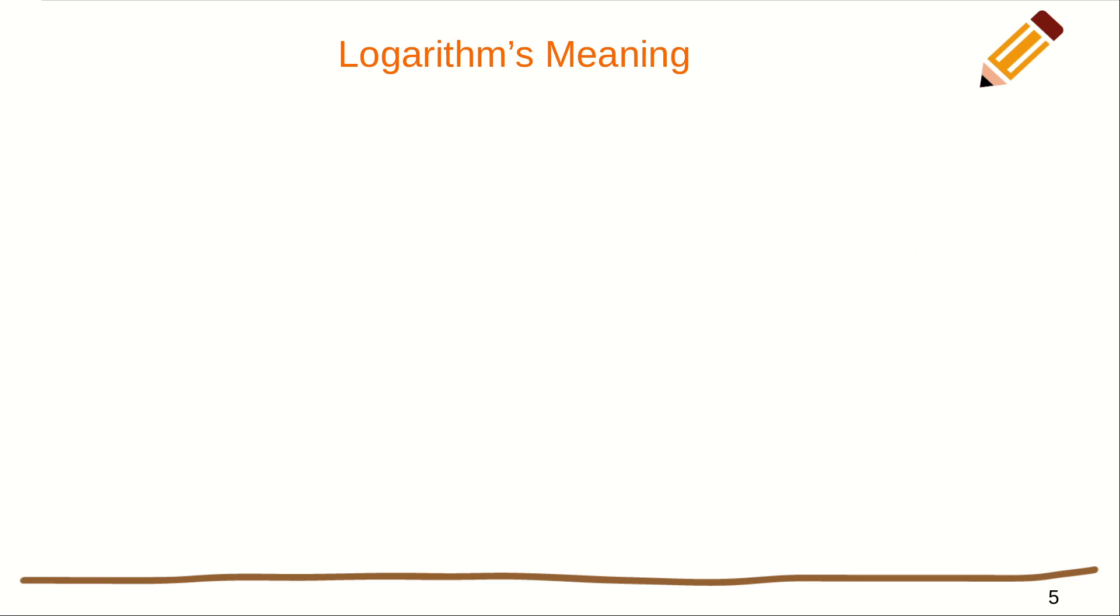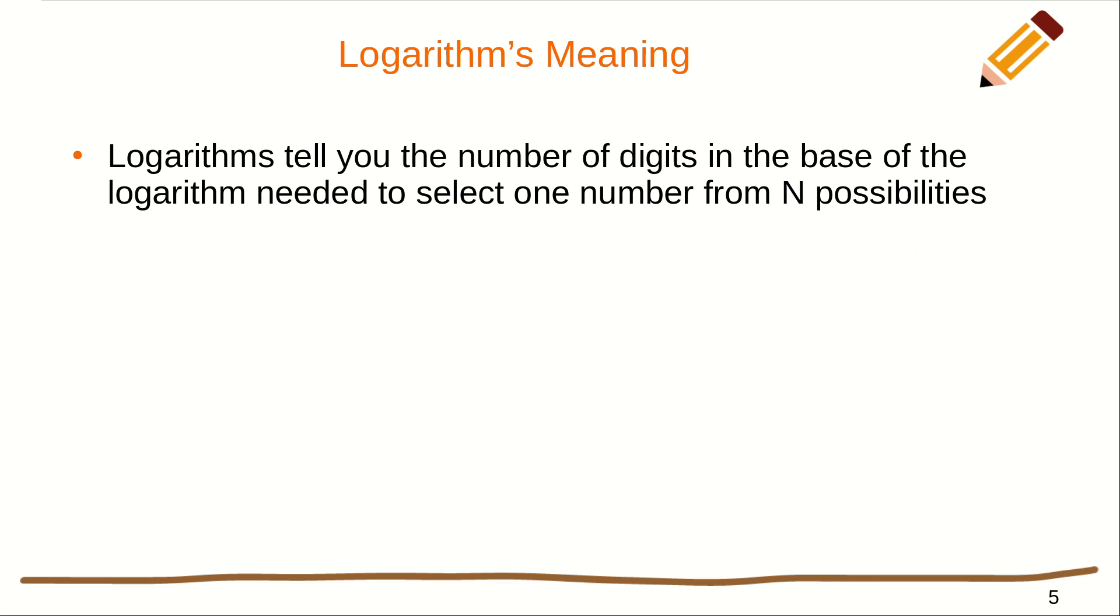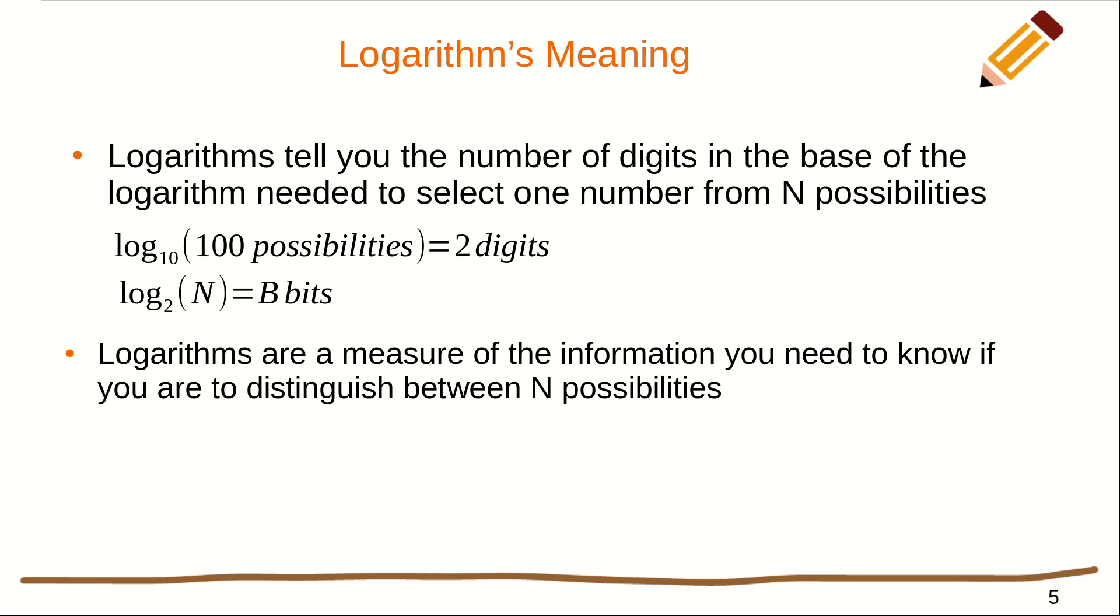What do logarithms really mean? Well, to me, logarithms tell you the number of digits in the base of the logarithm needed to select from n possibilities. So, for example, log base 10 of 100 possibilities is 2 digits. Log base 2 of n is b bits. Logarithms are a measure of the information you need to know if you need to distinguish between n possibilities.